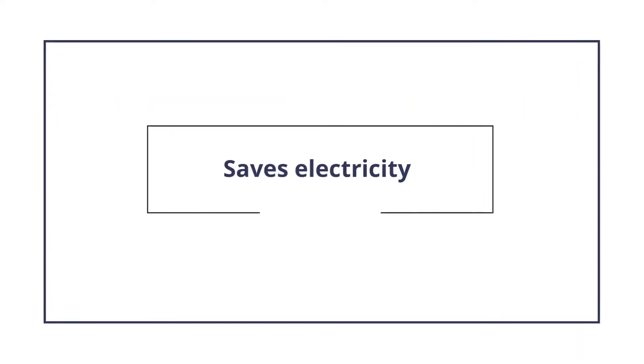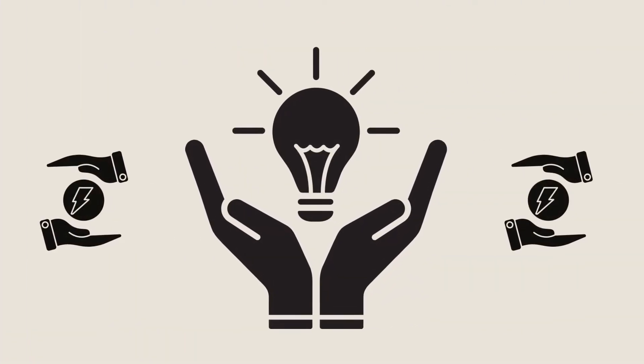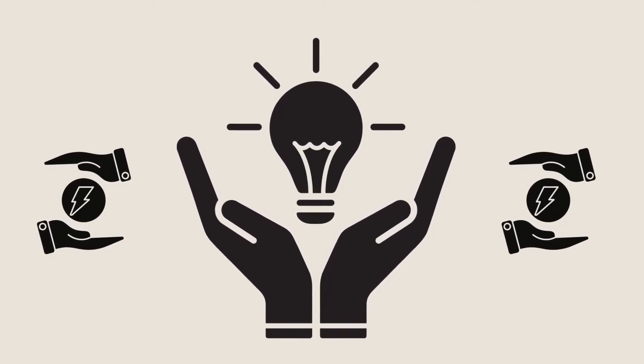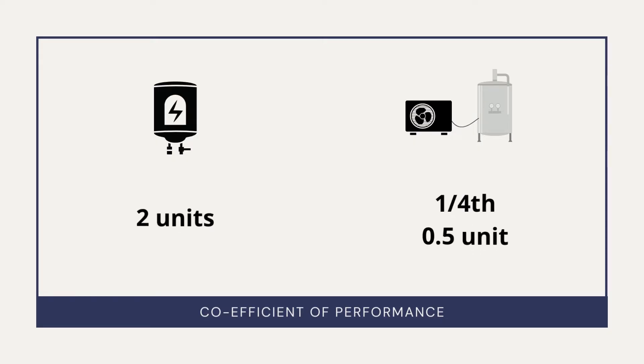The second point is it saves electricity. Let us see how electricity is saved with the heat pump water heater. An electrical geyser will consume 2 units of electricity if it runs for an hour. But a heat pump will use 1 by 4th of what a geyser is using. For example, assume a geyser in your home is of 2 kilowatt, generally it is 2 kilowatt.